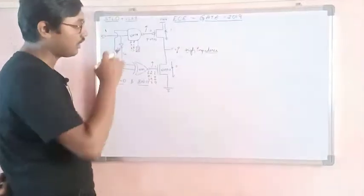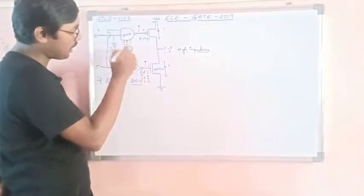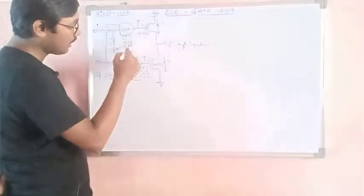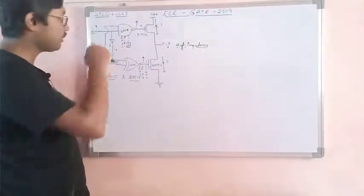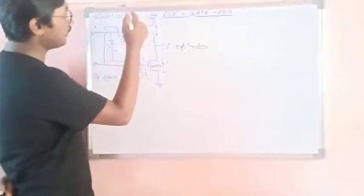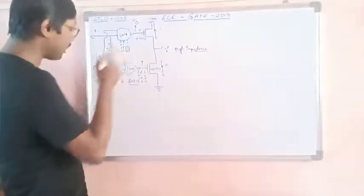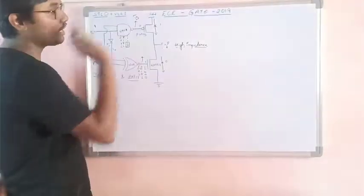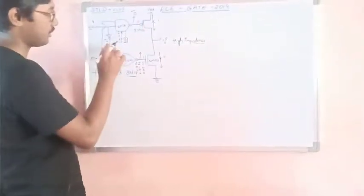If D is 0 I am getting 1; if D is 1 I am getting 0 — it is flipping, so the output of this gate is D-bar. That is the output of this NAND gate. Now looking at the NOR gate: if A equals 0, whatever the B value is, I am getting an opposite value. So the NOR output also gives D-bar.